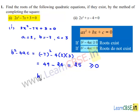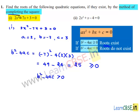Since b² minus 4ac is greater than 0, we say that roots exist. Let us find those roots by the method of completing the square.